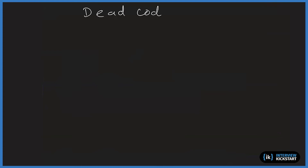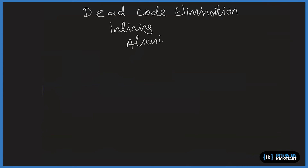What optimizations does LTO do? One key thing is dead code elimination — if code is never called it can be eliminated. It also does function inlining and aliasing analysis. All this is done globally across modules because the LTO now has access to all compiled modules in intermediate code form, and it generates a single optimized intermediate output which the linker then translates to the final object.